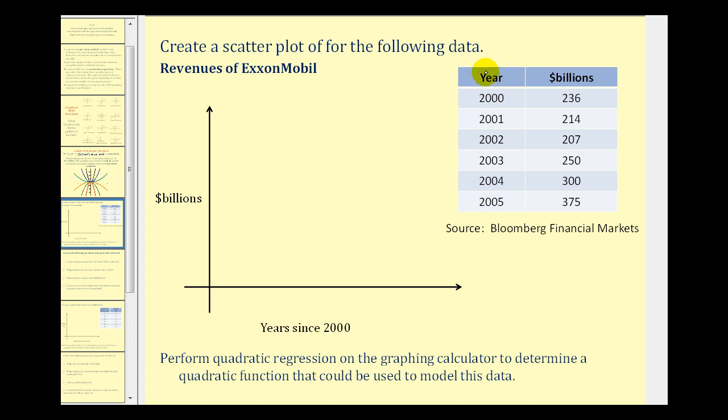Now it's typical when x is a year to let the base year represent x equals zero. So the year 2000 will be x equals zero, 2001 x will be one, two, and so on, all the way to x equals five.